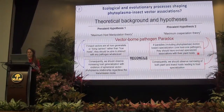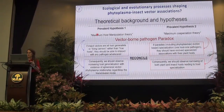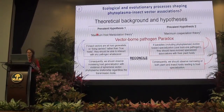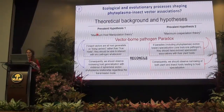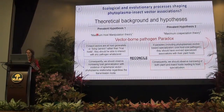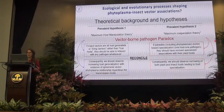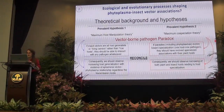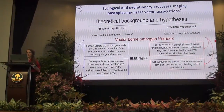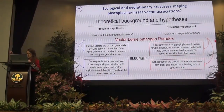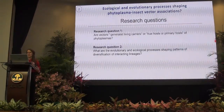Let me drive you into the paradox. First hypothesis: if insect vectors are all generalists — living carriers rather than true hosts — they should be able to interact with any pathogen whatsoever. Consequently, we should observe increasing host generalization with ephemeral vector-phytoplasma relationships regardless of transmission mode — so we should have everything everywhere. On the other hand, if we believe the maximum co-speciation theory, parasites should have more specialized associations with their hosts. Consequently, we should observe congruence in both plant and insect phylogenies, leading to host specialization and eventually extinction.